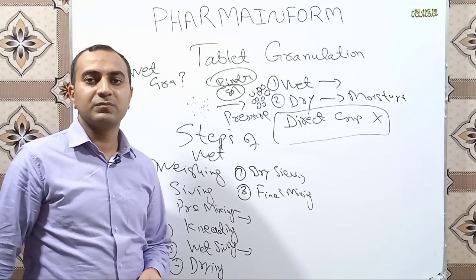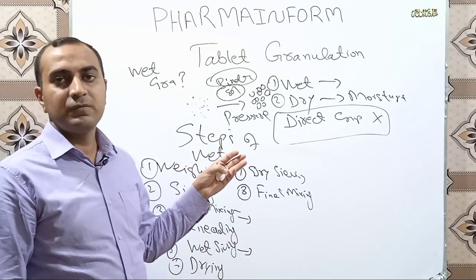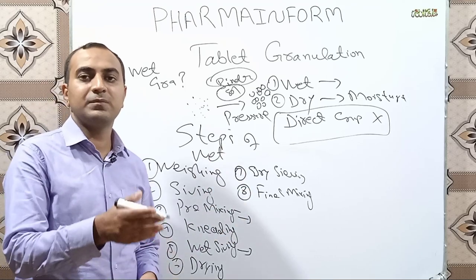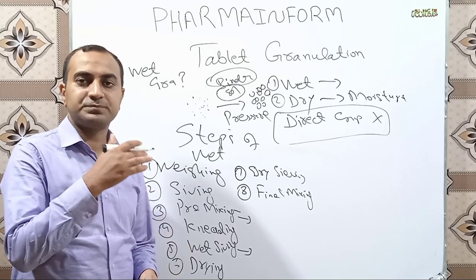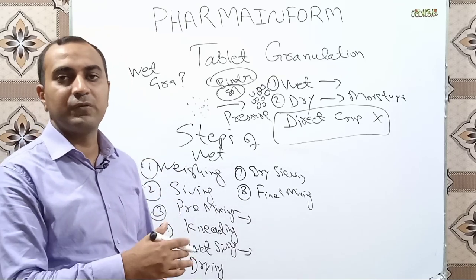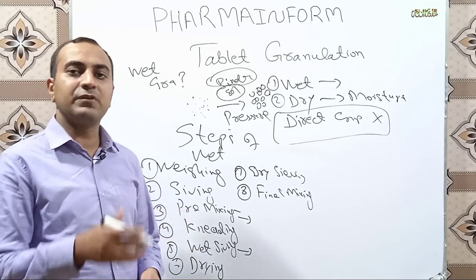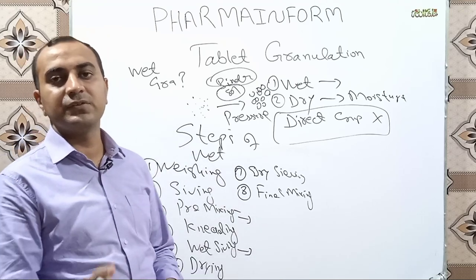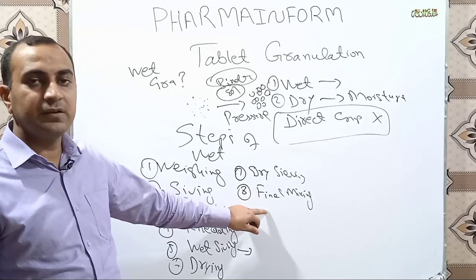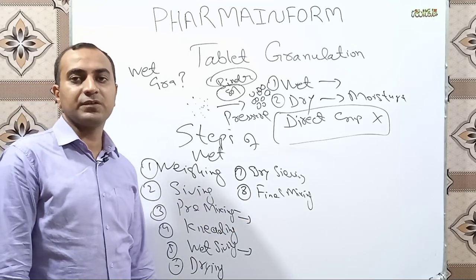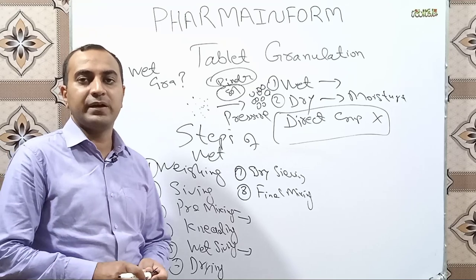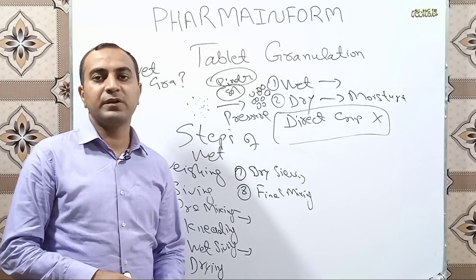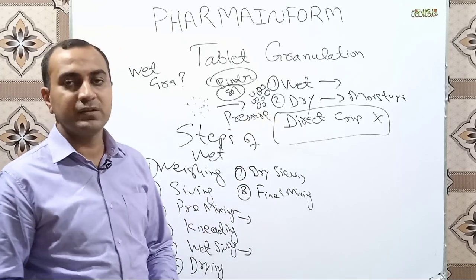To briefly recap: first we weigh our excipients, sieve them, pre-mix them, then add binder solution or solvent to convert powders into wet mass. The wet mass is sieved, then dried, then sieved again, and finally mixed with the remaining excipients to obtain a uniform blend. That completes the wet granulation process.